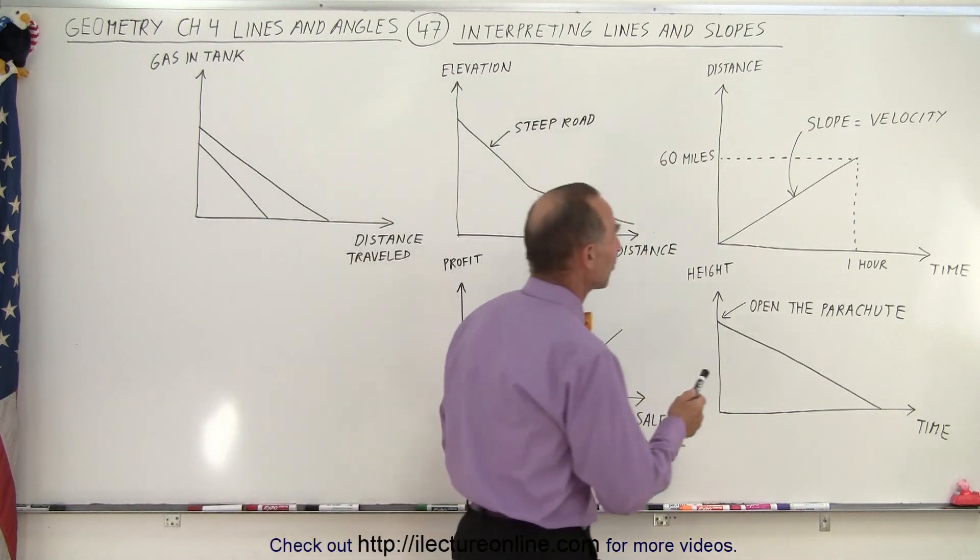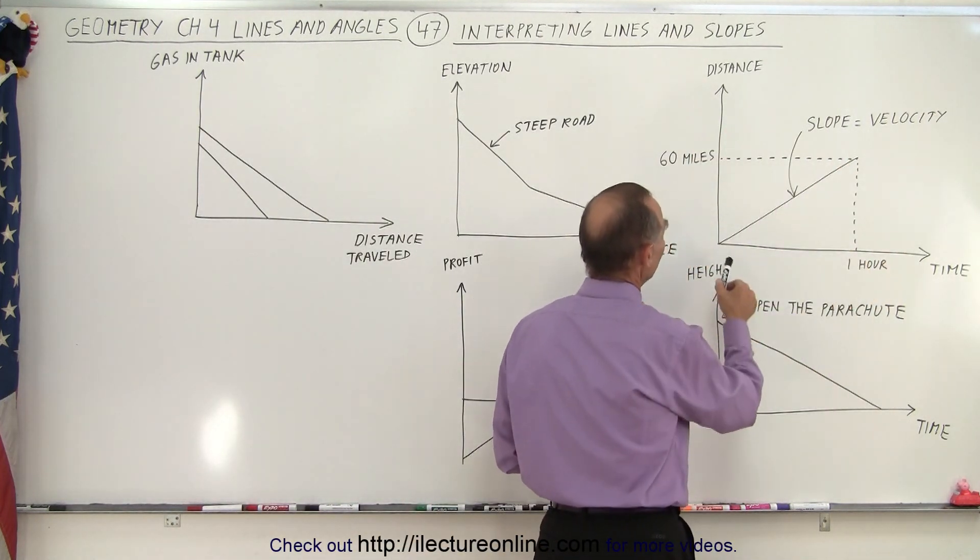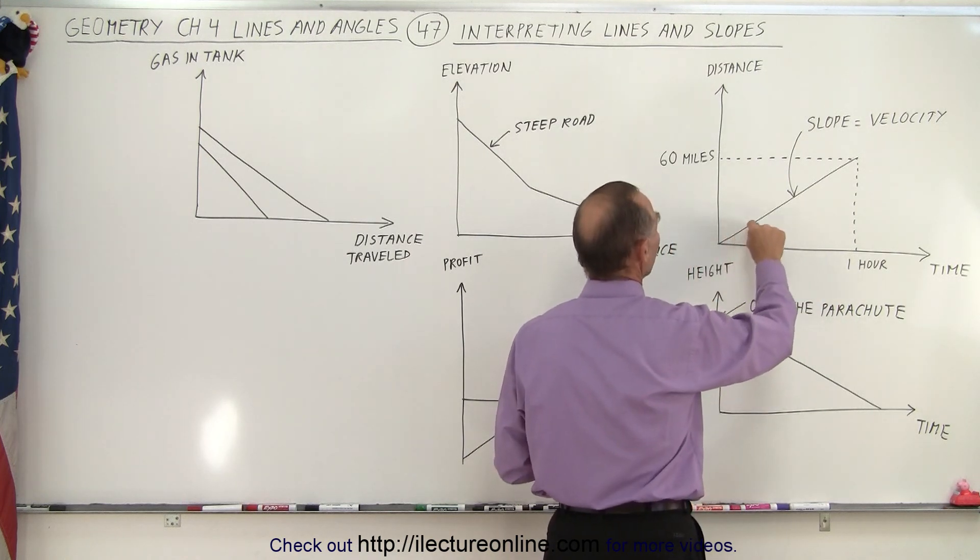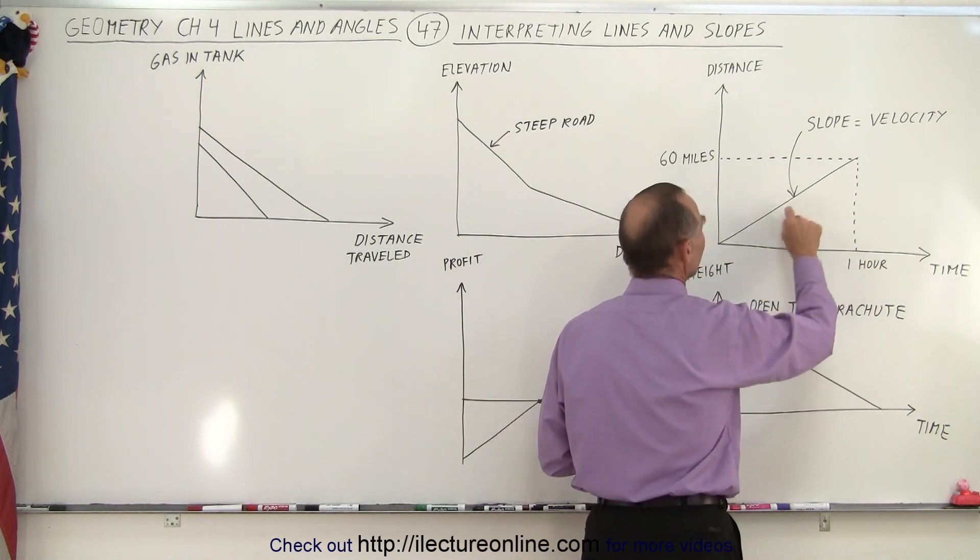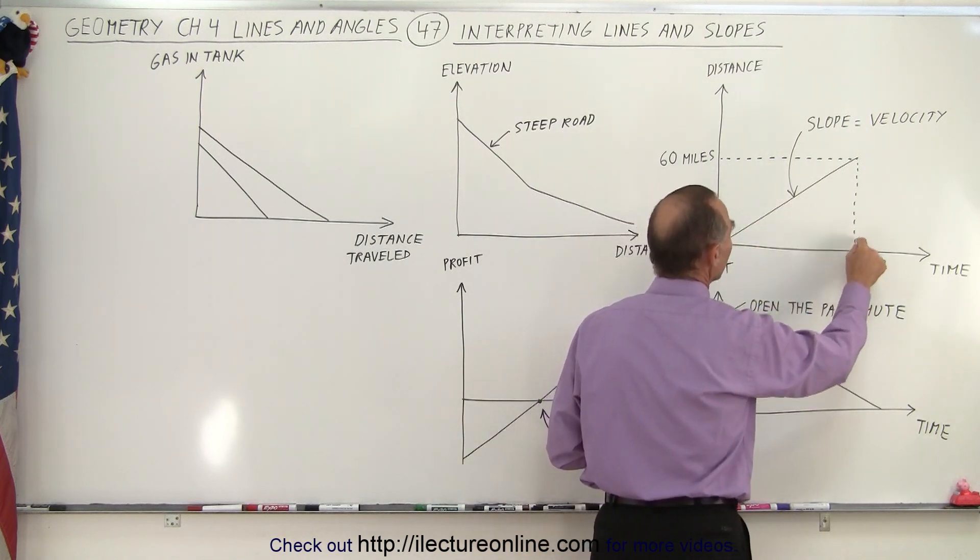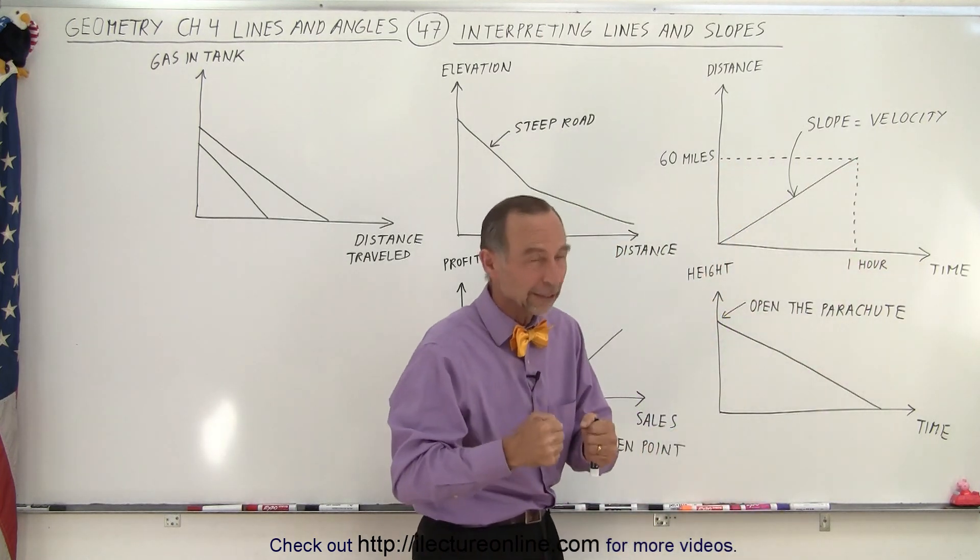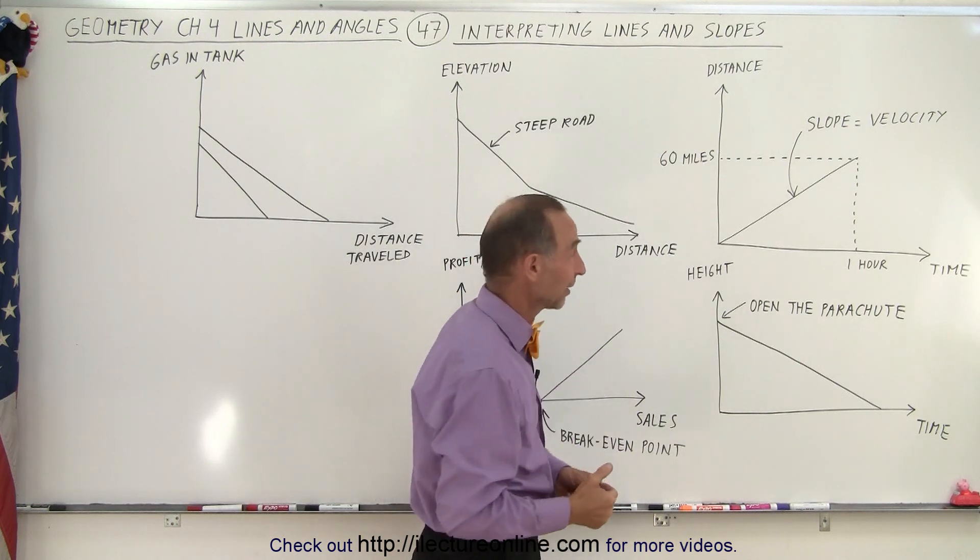So first graph shows distance versus time. Notice that as time goes on we're covering more and more distance. As we're going along this line the more time elapses the more distance you've covered. You can see that after one hour the distance covered is now 60 miles. I'm assuming that someone's doing that in their car because that would be quite hard to do it walking or running or on a bicycle.